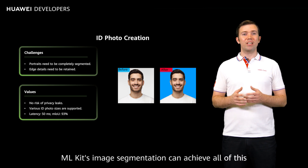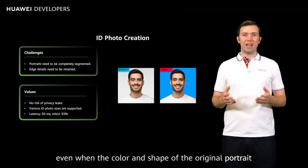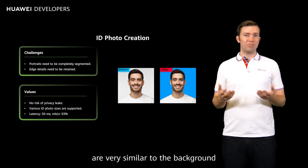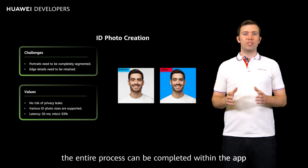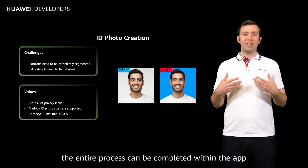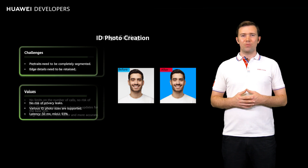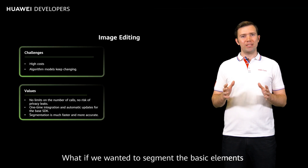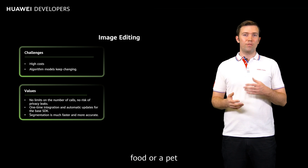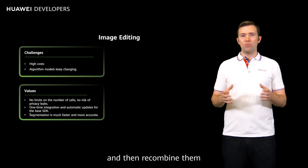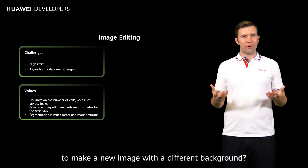ML Kit's image segmentation can achieve all of this, even when the color and shape of the original portrait are similar to the background. What's more, the entire process can be completed within the app, preventing privacy issues. What if we wanted to segment the basic elements in an image, such as a portrait, food, or a pet, and then recombine them to make a new image with a different background?